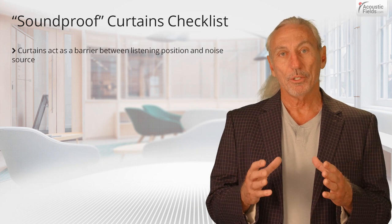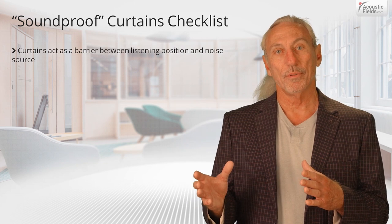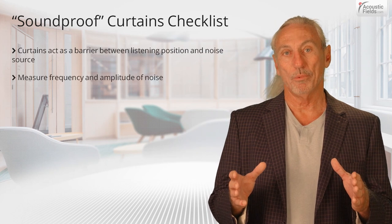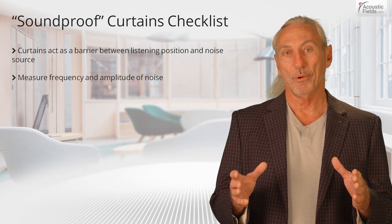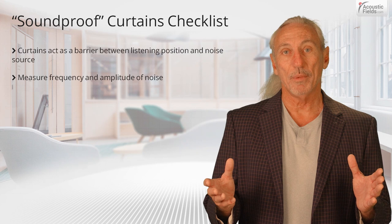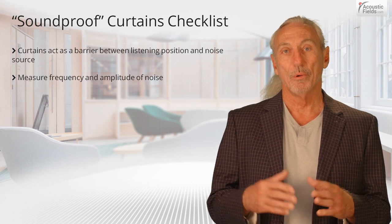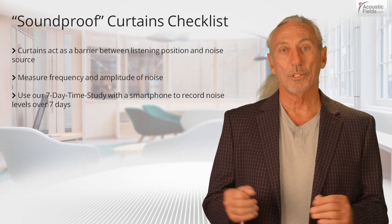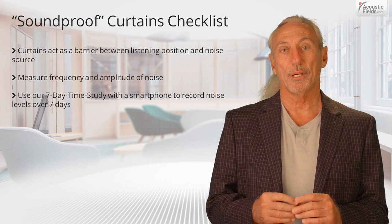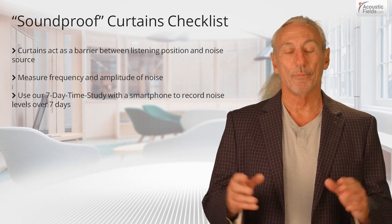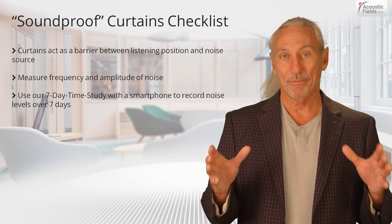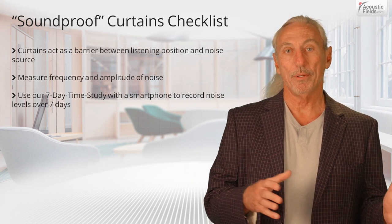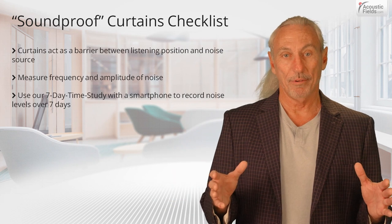So if we're going to use the term soundproof curtain, we've got to know the frequency and the amplitude of the noise that we're dealing with. How do we do that? We simply measure it — it's not hard to do. We have a seven-day time study where you can do that, and it's real easy. You can do it with an iPhone and we have apps to help you with that. We like to measure over seven days with the quiet periods and the loud periods so we get an average.